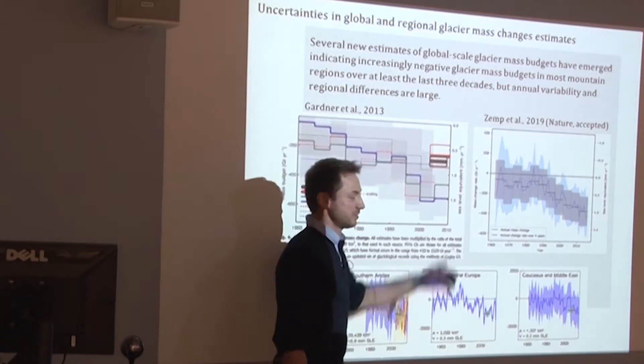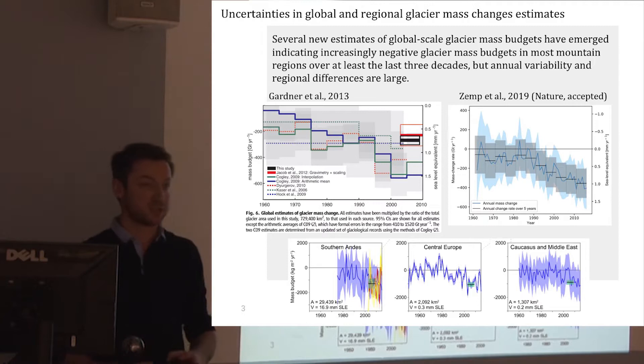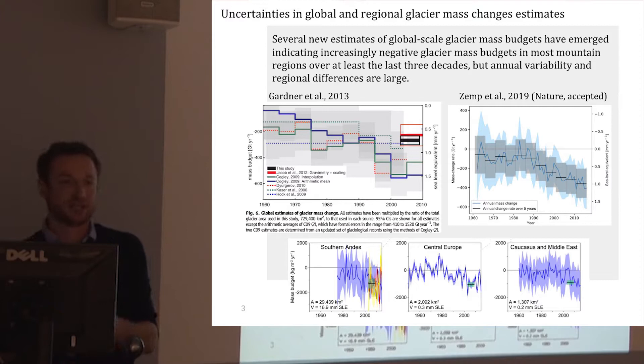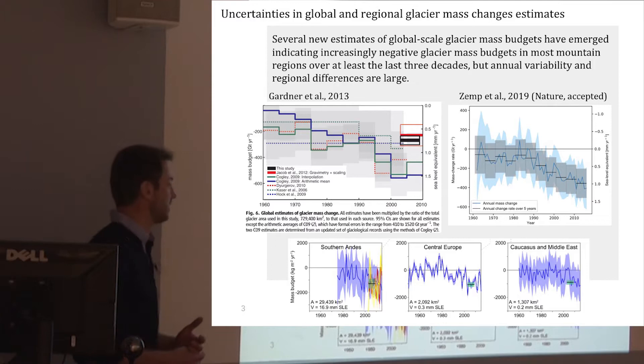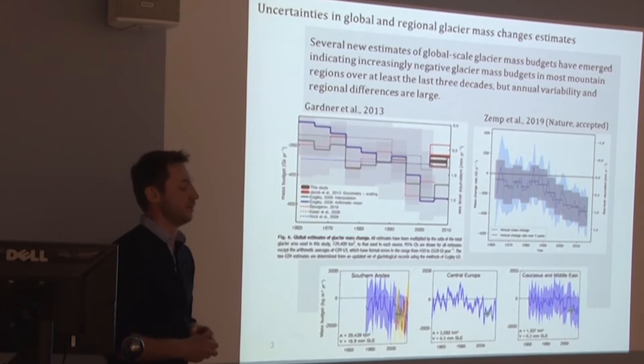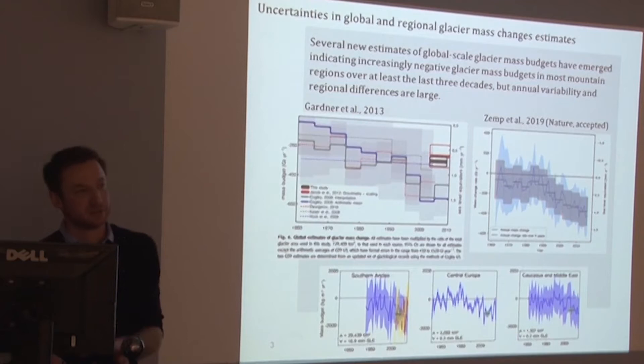This work stressed that direct glaciological mass balance measurements tend to overestimate negative mass balance for different reasons — the locations of those glaciers are in convenient valleys, so they are usually lower. That raised the question: do we actually know how much ice is being lost in recent decades? This work, about to be published in Nature in the next couple of weeks, presents a new approach to mass change assessment, also based on comparing glaciological and geodetic mass balances.